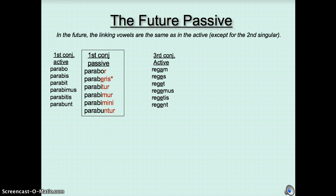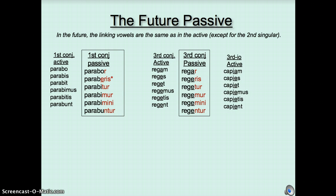In the third conjugation, active is regam, reges, reget, regemus, regetis, regent. The passive is going to look like regar, regeris, regetur, regemur, regemini, regentur. Linking vowels are no different at all. Same with the third IO. Capiam, capies, capiet, capiemus, capietis, capient, turns into capiar, capieris, capietur, capiemur, capiemini, capientur.